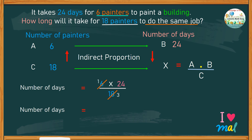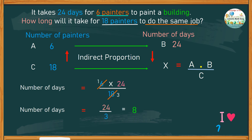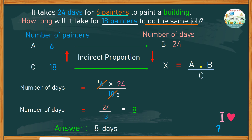What we have left are much smaller numbers, which are 24 over 3, or 24 divided by 3, which gives a quotient of 8. So to answer the question as to how many days it will take for 18 painters to do the same job, the answer is eight days. Let's try another problem.